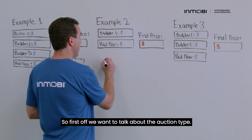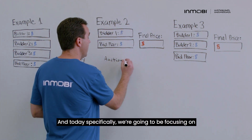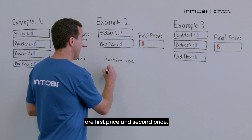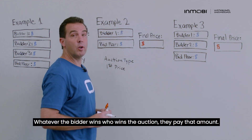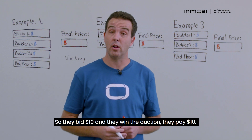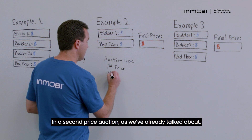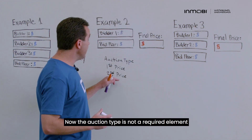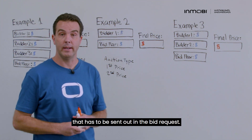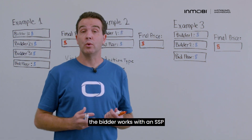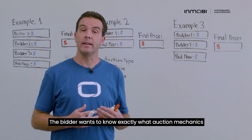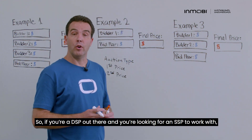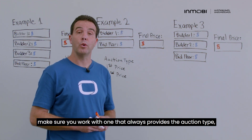First, we want to talk about the auction type. Today we're focusing on second price auctions, but the two main auction types used in programmatic are first price and second price. With first price, it's simple — whoever wins the auction pays the amount they bid. So if they bid ten dollars and win, they pay ten dollars. In a second price auction, the highest bidder pays one cent higher than the second highest bidder. The auction type is not a required element in the bid request, but it's really important that the bidder works with an SSP that always provides it. If you're a DSP looking for an SSP to work with, make sure they always provide the auction type so there's no ambiguity about what mechanics you're functioning under.